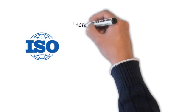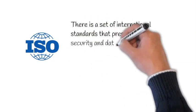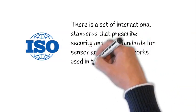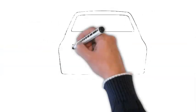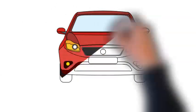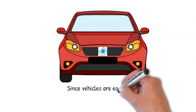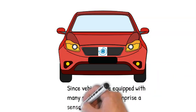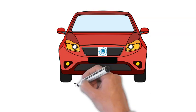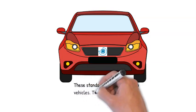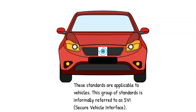There is a set of international standards that prescribe security and data standards for sensor and control networks used in the intelligent transportation system. Since vehicles are equipped with many sensors that comprise a sensor and control network, these standards are applicable to vehicles. This group of standards is informally referred to as SVI.